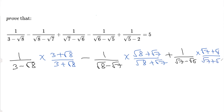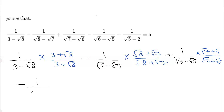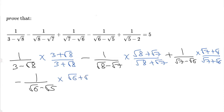We are still left with some terms: minus 1 over root 6, that is 1 over root 6 minus root 5. Here too we rationalize by multiplying and dividing by root 6 plus root 5.